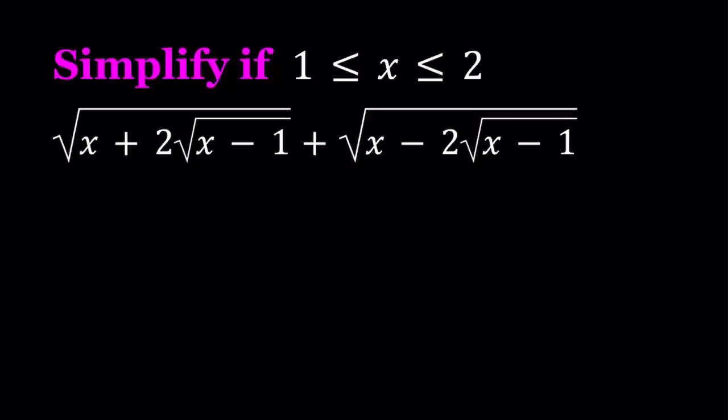Hello everyone. In this video we're going to be simplifying a radical expression. We have the square root of x plus 2 times the square root of x minus 1, plus the square root of x minus 2 times the square root of x minus 1. And x is between 1 and 2 inclusive, and we're going to be simplifying this expression.